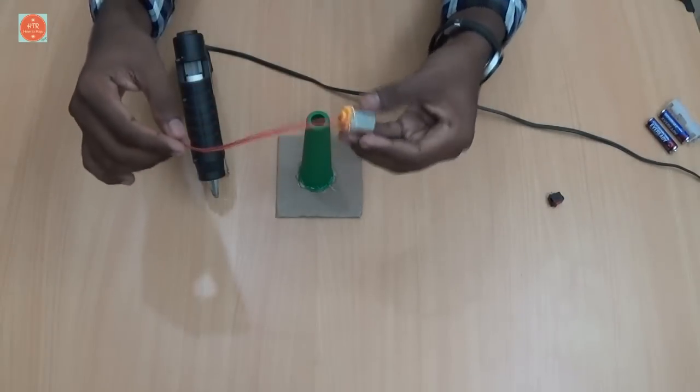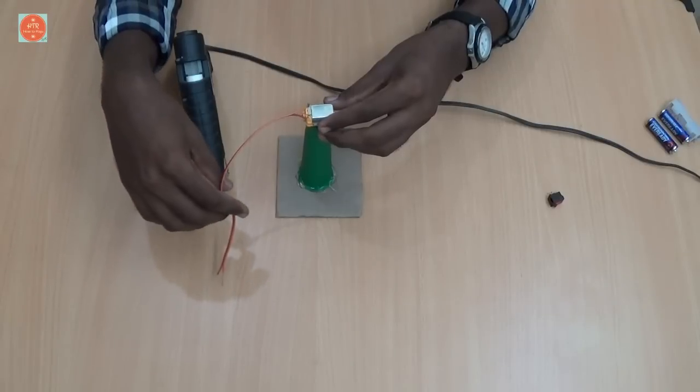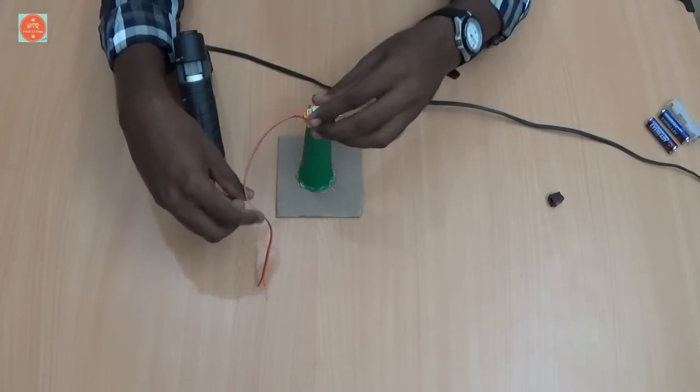Next, take the motor and place it on top of the yarn cone and stick it using the glue gun.